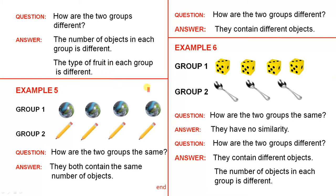Next example: Group 1 has 4 marbles, Group 2 has 4 pencils. How are the two groups the same? They both contain the same number of objects — that's it, nothing else is the same. How are the two groups different? They contain different objects.